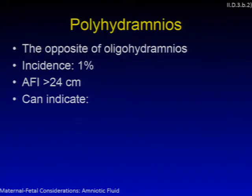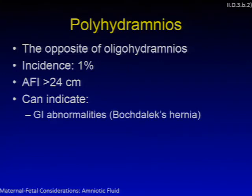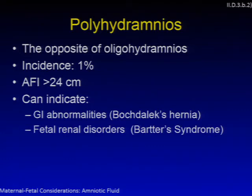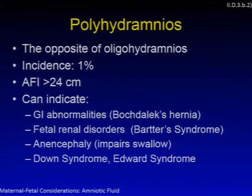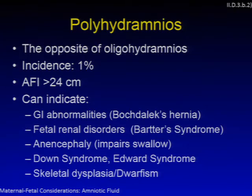Polyhydramnios is the opposite of oligohydramnios and occurs in about 1% of all pregnancies. It is defined as an amniotic fluid index greater than 24 centimeters. It can indicate Bochdalek hernia — protrusion of the stomach into the diaphragm impairing adequate swallowing of amniotic fluid — Bartter syndrome — overproduction of urine — anencephaly, Down and Edwards syndromes with GI abnormalities, and skeletal dysplasia impairing fetal swallowing.